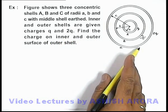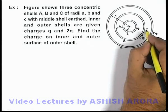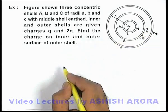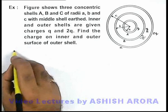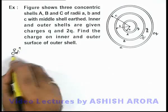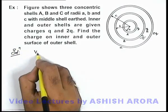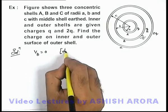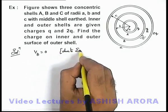To find this, we first need to find out the charge supplied by earth onto the middle shell B, such that its final potential is equal to zero. So we state that the potential of shell B is equal to zero, due to the earth connection.